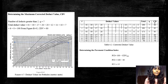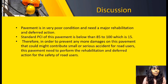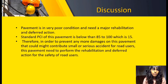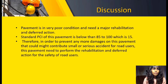The last part is determining the maximum corrected deduct value (CDV) and the pavement condition index. Based on the data analysis, this section of pavement is in very poor condition and needs major rehabilitation and deferred action because the PCI of this pavement is 15, which is below the standard PCI of 85 to 100. This pavement does not meet the criteria for a good pavement, which requires a PCI over 85. Therefore, to prevent further damage and potential accidents, rehabilitation and deferred action are needed for road user safety.